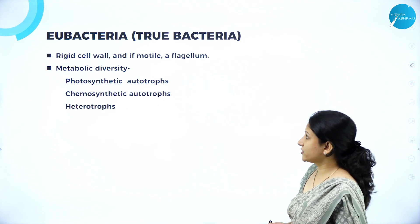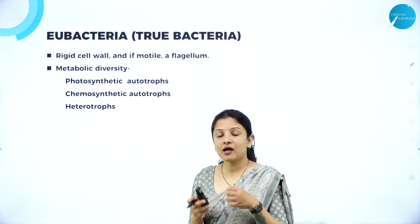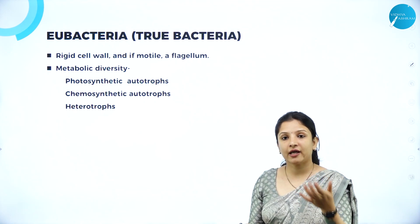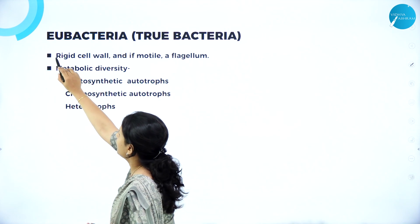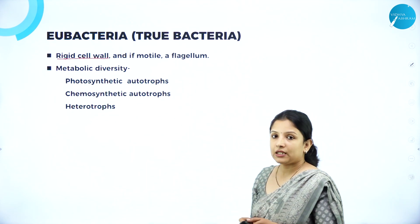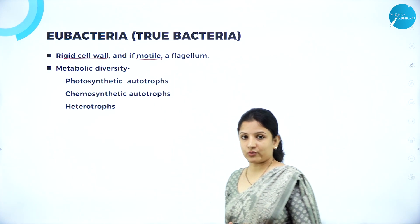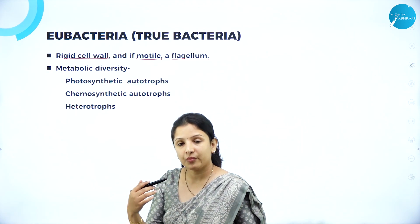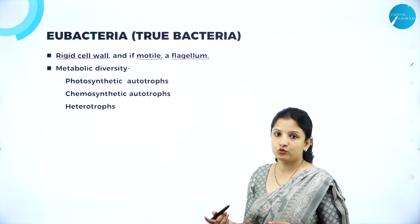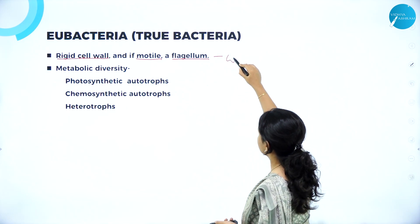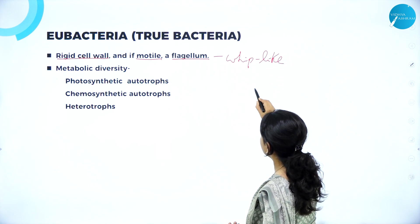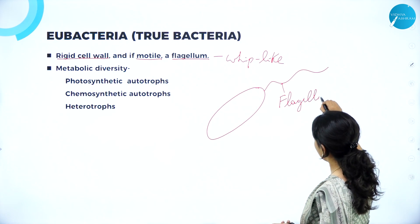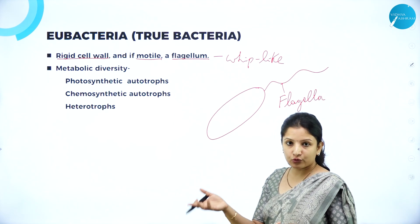Next, talking about the next class under Kingdom Monera — it is Eubacteria. Eubacteria are the true bacteria. They are found abundant in nature — in air, water, soil, everywhere. On humans, on plants, on animals, everywhere you can find them. They also have a very tough or rigid cell wall. And if these bacteria are motile, meaning they are capable of moving from one place to another, it is because they have a flagellum. Those bacteria which are motile have a structure called flagellum that helps them to move — it is a whip-like structure. Like how we have legs to move, these bacteria have flagellum which helps them move from one place to another.